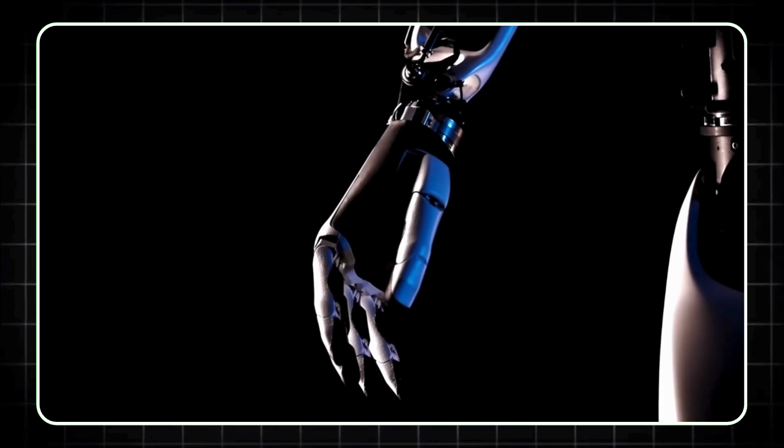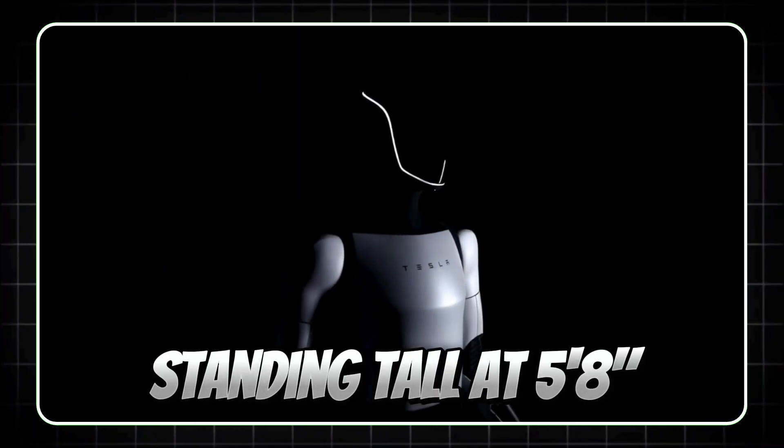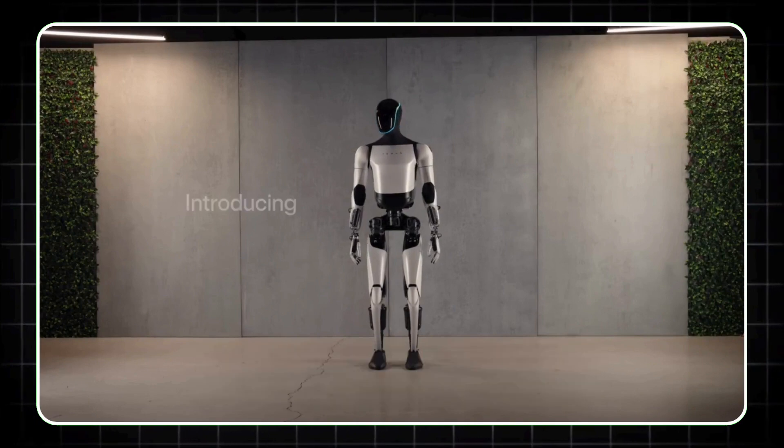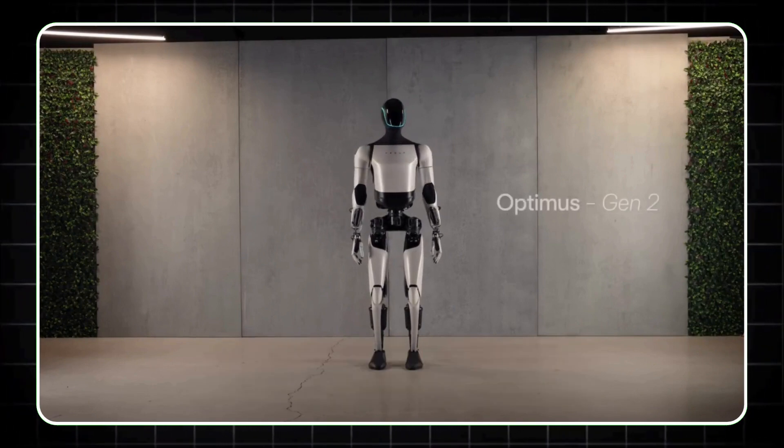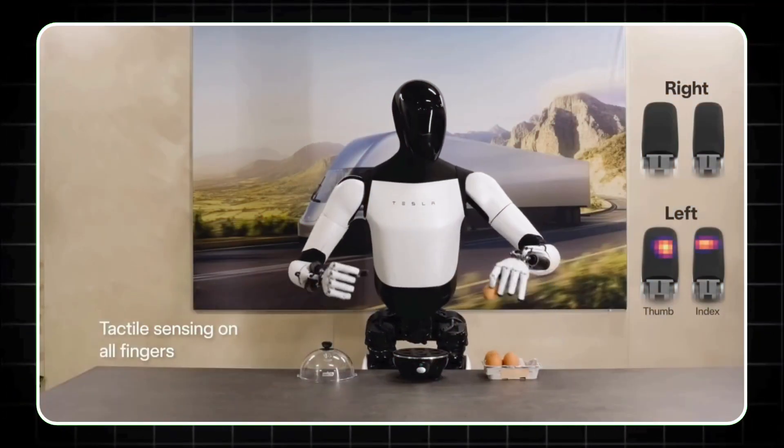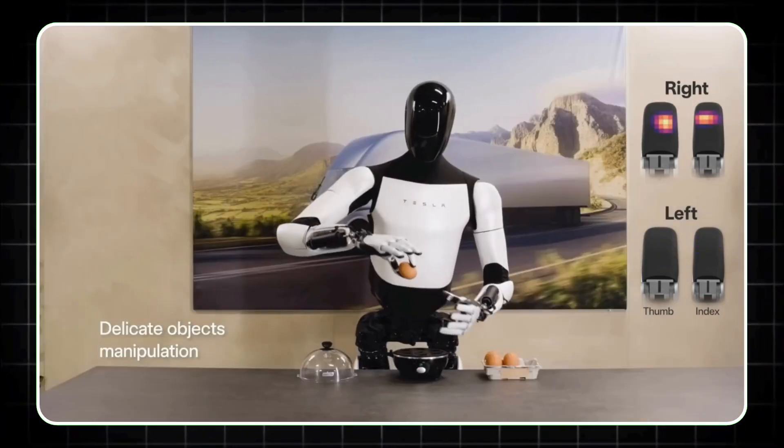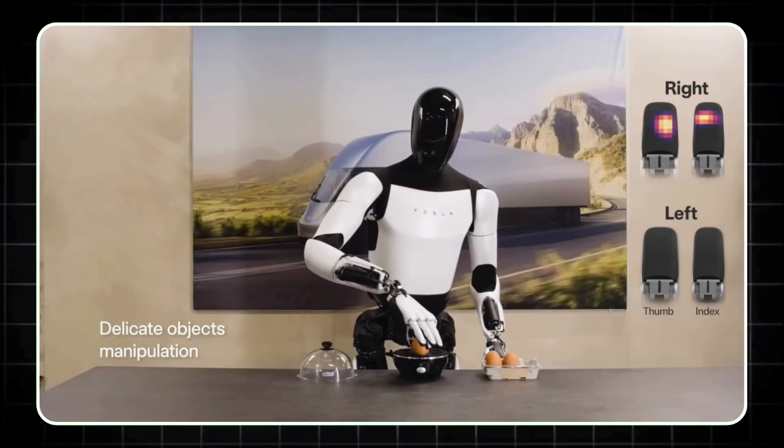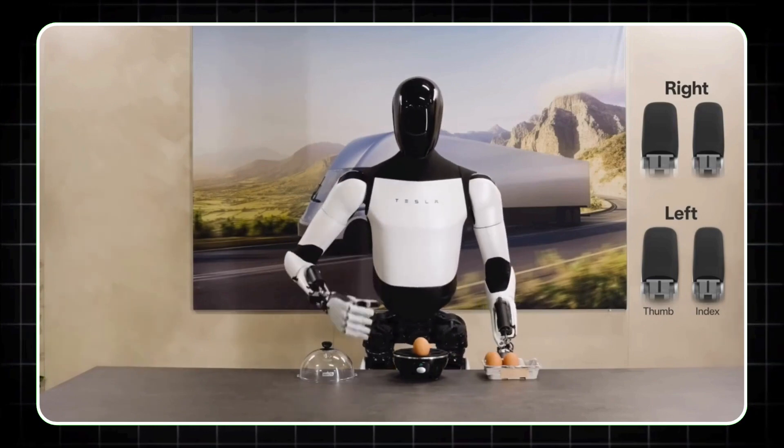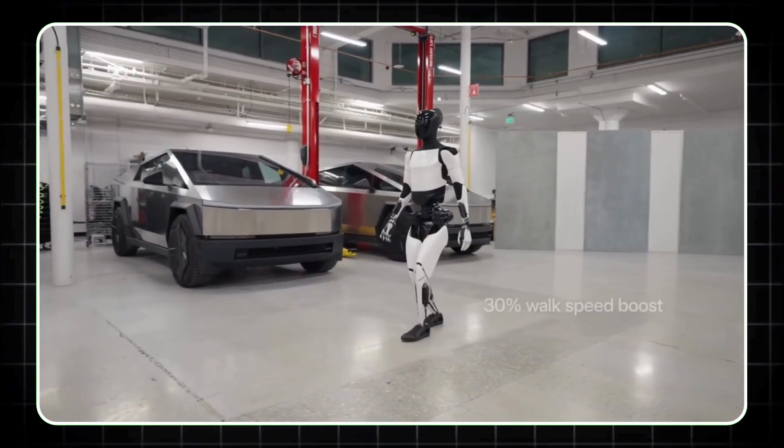Now, let's talk about the Tesla Optimus Gen 2. Standing tall at 5'8" and weighing 138 pounds, this humanoid robot is engineered to assist in manufacturing, tackling repetitive and dangerous tasks that can be hazardous for human workers. With its sleek design and enhanced hand functionality, Optimus is poised to change the landscape of industrial work.